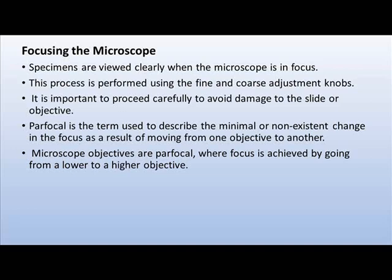Here we learn another term called parafocal. Parafocal is the term used to describe the minimal or non-existent change in focus as a result of moving from one objective to another. Microscope objectives are parafocal, where focus is achieved by going from a lower to a higher objective — for example, focusing at 10x before moving to 40x, then to 100x. In this case, the parafocal term can be applied.